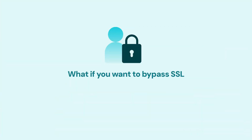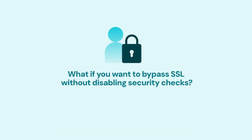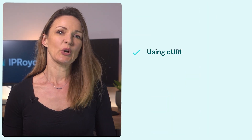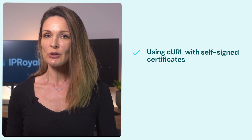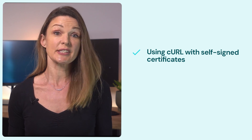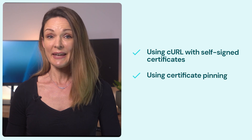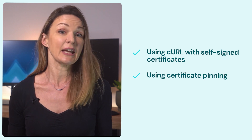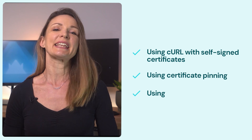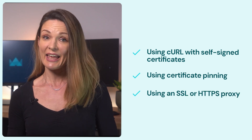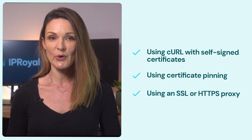But what if you want to bypass SSL without disabling security checks? Here are some things that can help when testing or debugging: using CURL with self-signed certificates by adding them to your local CA store so your system recognizes them as valid; using certificate pinning to define trusted certificates, though it comes with security risks; and using an SSL or HTTPS proxy to handle certificate verification for you. The key is to choose a reliable SSL or HTTPS proxy from a trusted provider — this way, you can bypass certificate verification while keeping your connection secure.